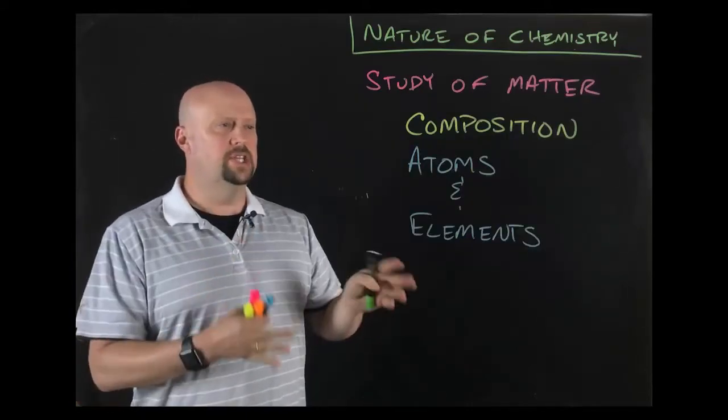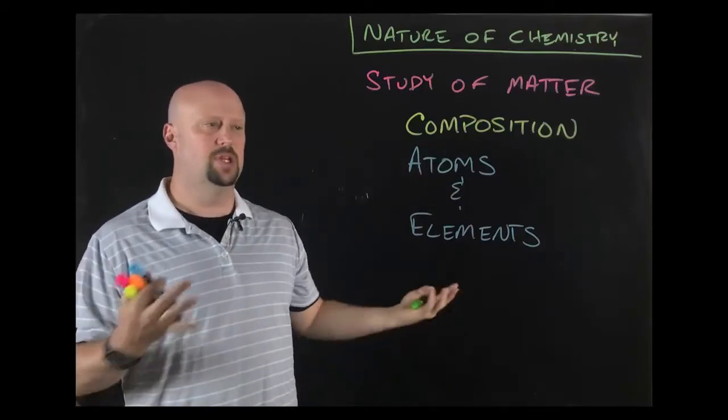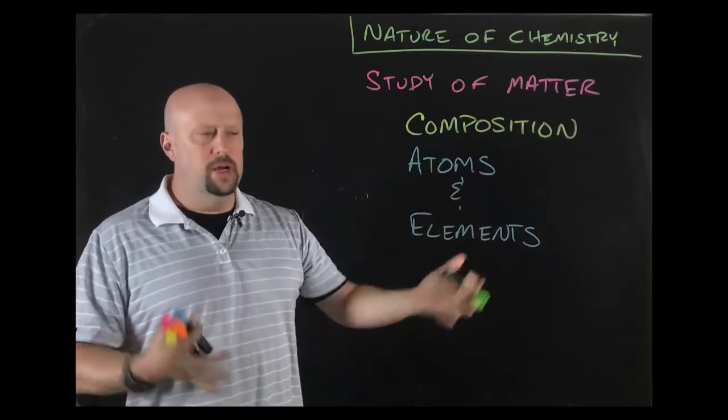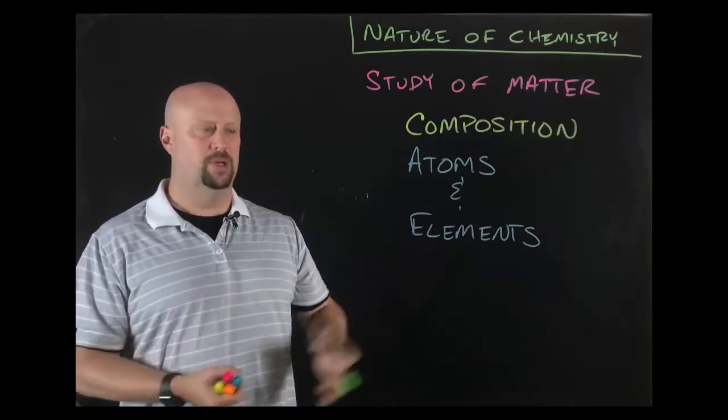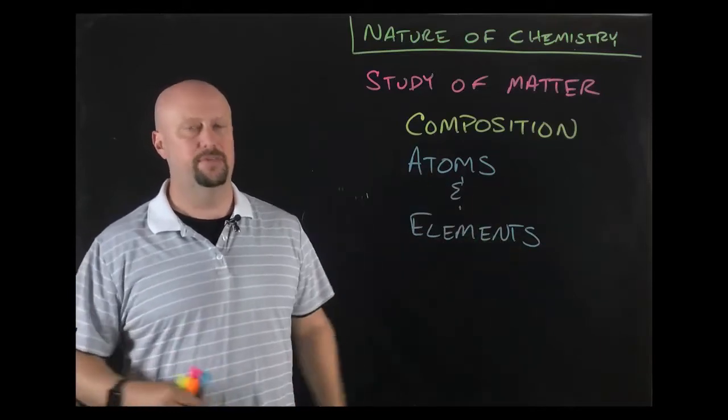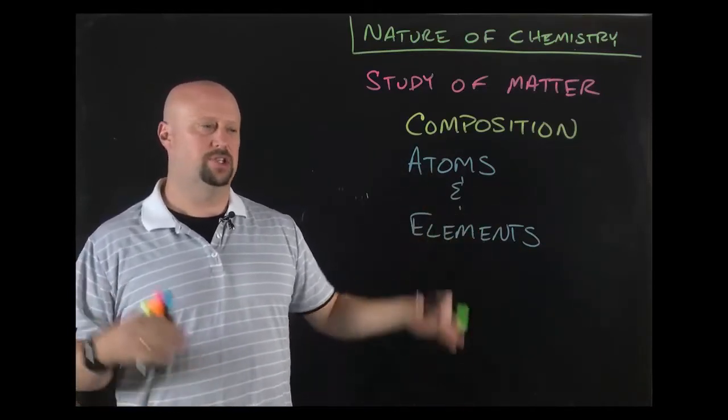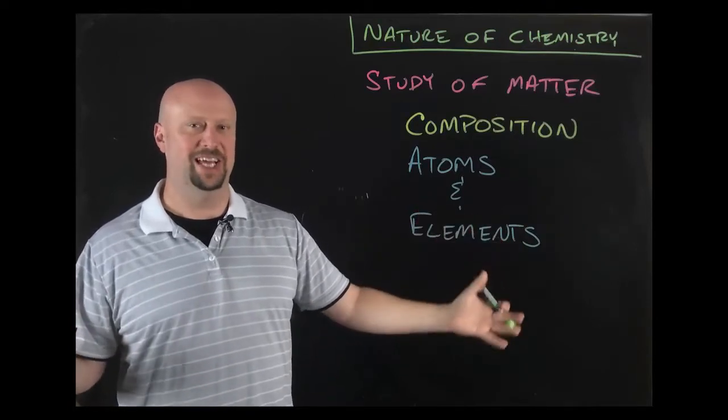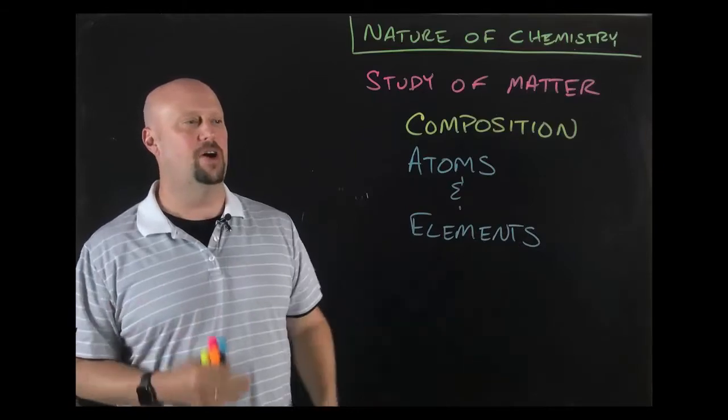So I'm not going to break down each of those five things, but I want to real briefly go back to the idea of composition. What is matter made of? Well, we know today that matter is made up of atoms and that there are a bunch of elements. When you look at the periodic table, it's the periodic table of elements. If you see a periodic table of anything else like rock music or whatever, that's just a gross blasphemy against what the periodic table actually should be. So the periodic table is the periodic table of elements.